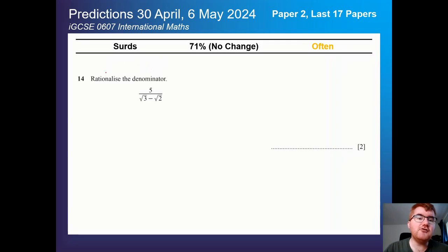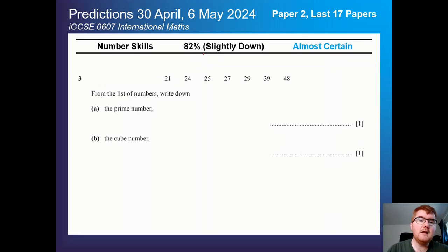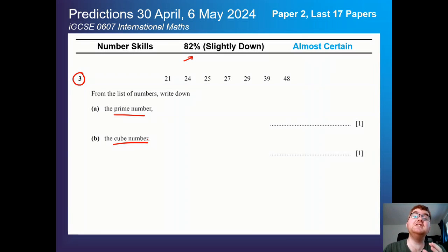On to SIRDS — rationalising the denominator, as always, is one of the most important topics, particularly for those A and A* students. No change at 71%; SIRDS come up very, very often. We have number skills slightly down at 82%, and this can vary in question type, usually appearing at the start of the paper. You can see question 3 on paper 2 which has a list of numbers asking you to write down primes and cubes, so making sure you know those definitions of numbers is very important.